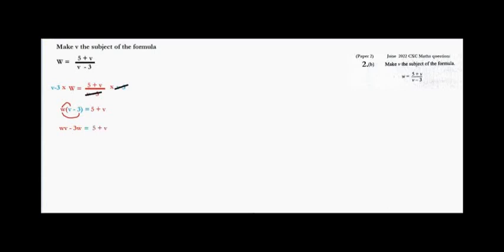Remember, we want to make V the subject of the formula, so we want V by itself. I want to get rid of the minus 3W on the left side, so I am going to add 3W to both sides. That cancels the 3W, and now we have WV equal 5 plus V plus 3W.